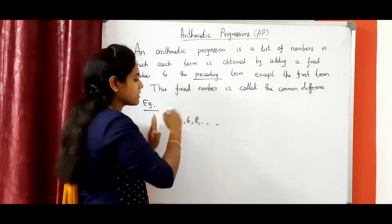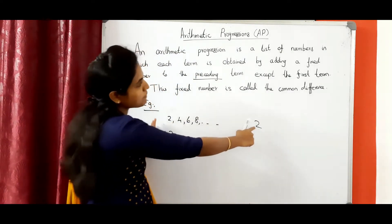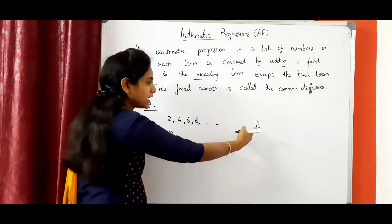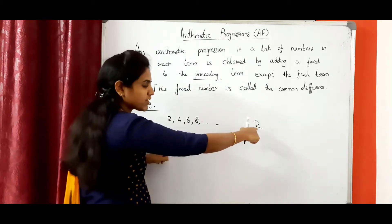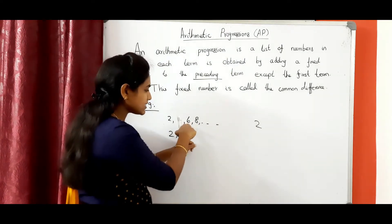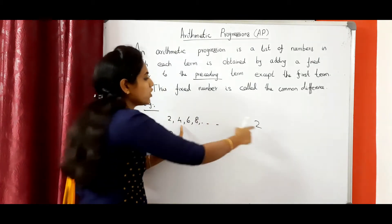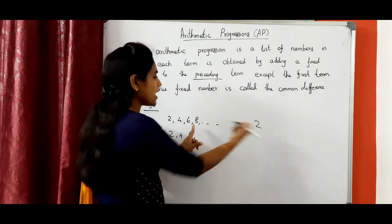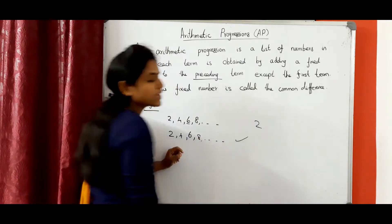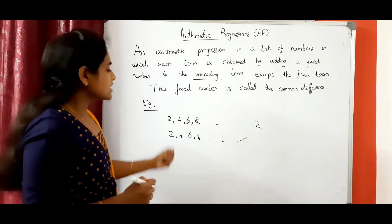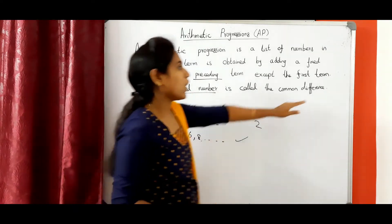Preceding term means the previous term. So here the fixed number is 2. Except the first term, I am adding 2, which is the fixed number. So 2 is the preceding term; we need to add fixed number 2: 2 plus 2 equals 4. Now how we can get 6? We need to add the fixed number to the preceding term. Preceding term is 4, so 4 plus 2 equals 6. Then preceding term is 6, so 6 plus 2 equals 8. Like this we will get the AP. So AP means each term is obtained by adding a fixed number to the preceding number. This fixed number is called the common difference.